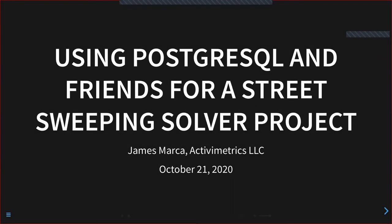Welcome to using PostgreSQL and friends for a street sweeping solver project. Speaker James Imarca, founding member at Active Metrics LLC and project scientist at UC Irvine, will discuss how to clean OpenStreetMap data using recursive common table expressions, convert one-way and two-way streets into a one-way network of curbs, convert the street network into its line graph dual, save solver output to a new table using Python, display the solver's routes using QGIS, and produce a smooth animation using PostGIS aggregate functions and windowing.